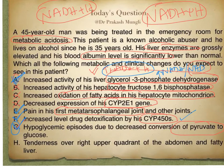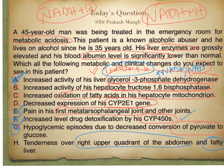Option H says tenderness over the right upper quadrant of the abdomen and fatty liver. This is indicative of fatty liver. There can also be an enlarged or tender liver due to acute hepatitis from alcohol, which can be a cause for right upper quadrant abdominal pain. Option H is also a correct choice.